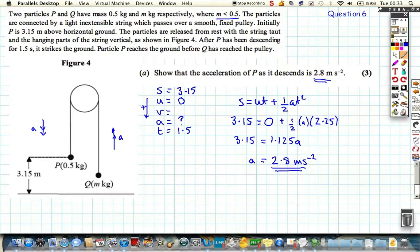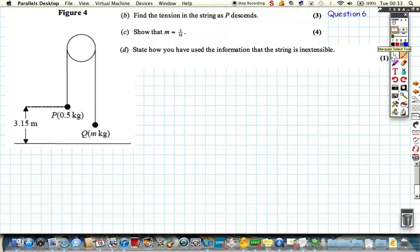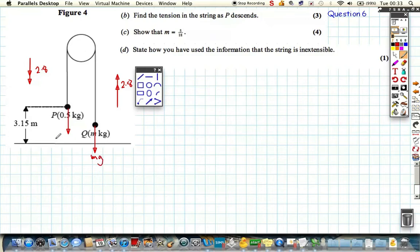We're going to need that for the next part of the question. The first thing we want to do is start drawing some forces. From the first part, the acceleration of Q is going to be 2.8 up, and the acceleration over here is going to be equal but in the opposite direction, so 2.8 down. Now we can add on the weights of each particle, which are Q mg acting downwards and 0.5g acting downwards.